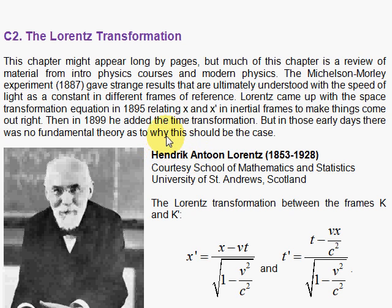Dr. Fiss here on the Lorentz Transformation. Michelson and Morley did an experiment in 1887 which showed that light behaves not like they thought at the time. Something funny was going on, and Lorentz came up with a mathematical transformation to replace the Galilean Transformation that would help explain these results. However, we have to wait until relativity comes out with Einstein to understand these equations from the point of view of a fundamental theory.